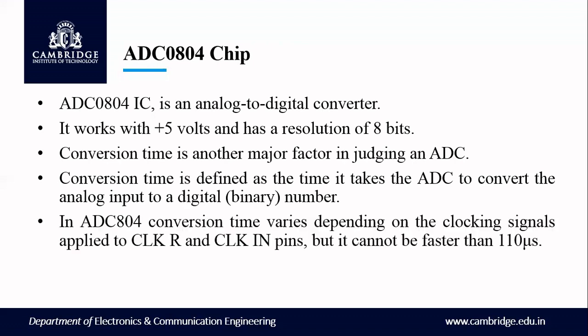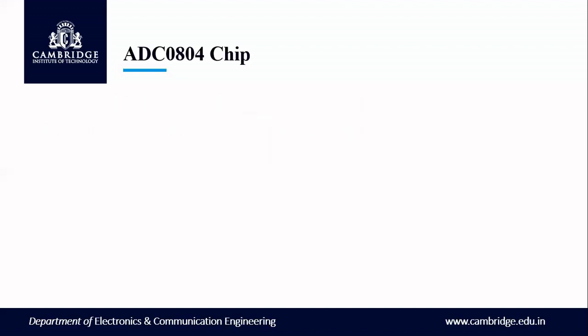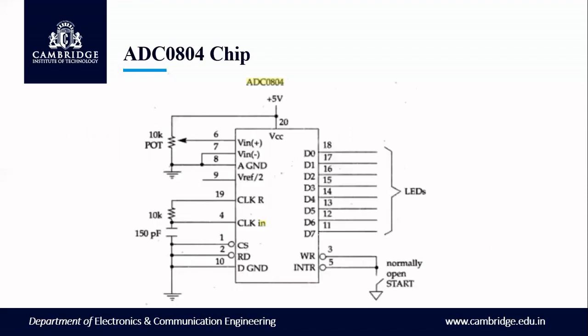In ADC0804, conversion time varies depending on the clock signals applied to the clock R and clock in pins of the ADC chip, but it cannot be faster than 110 microseconds. We call this self-clocking in the ADC chip. Let us see the details about this chip.